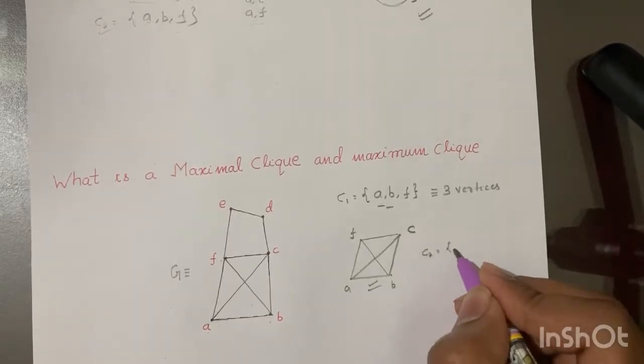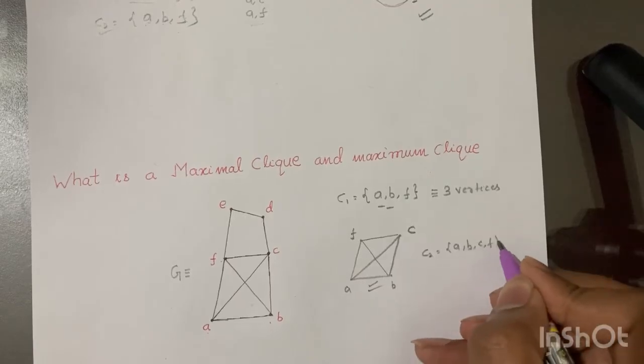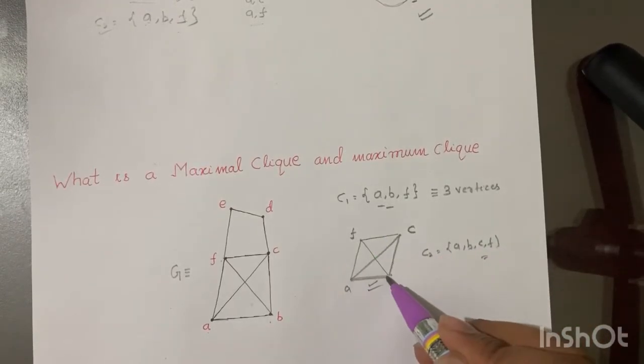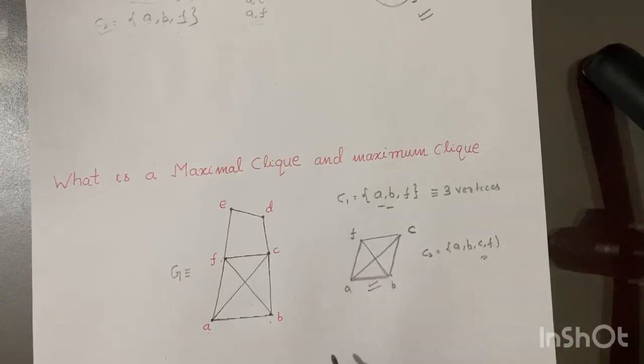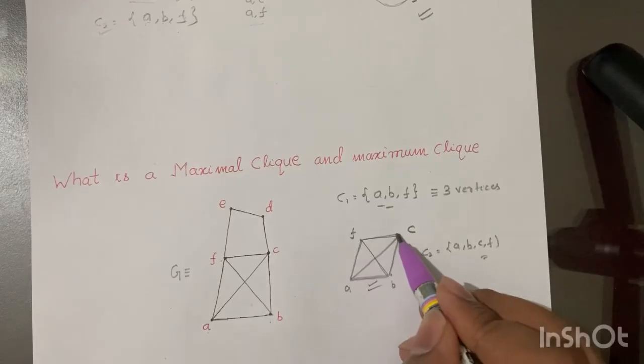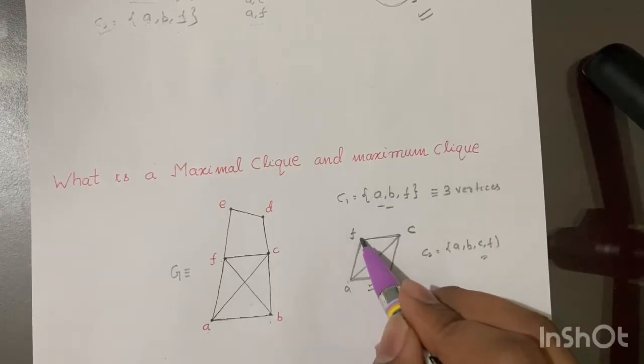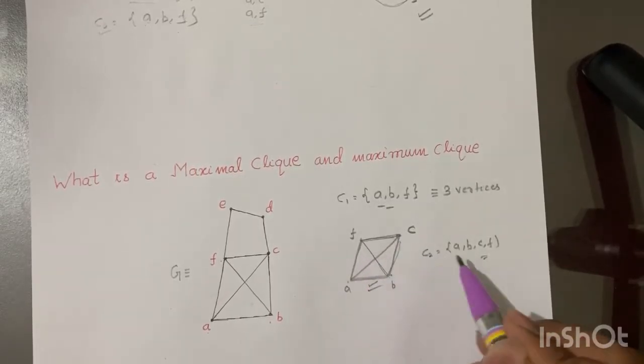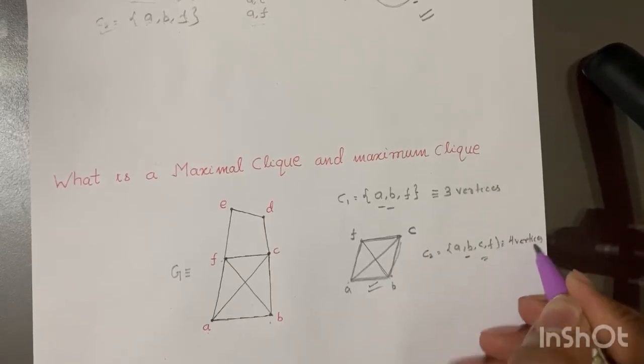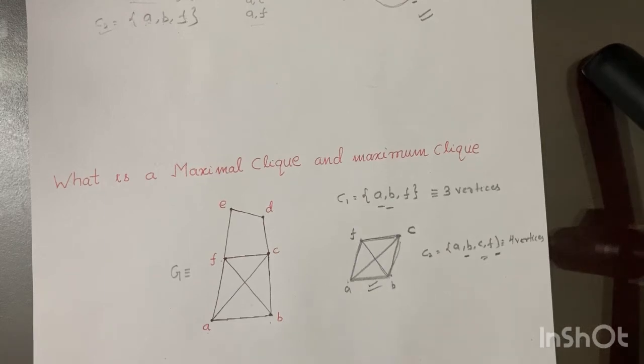So C2, A, B, C, and F is also a clique. So A, B, and F, regardless of being a clique, will not be called a maximal clique, because vertex C could be added to expand it to a clique of size 4. So this will not be called a maximum clique.